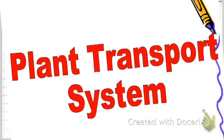Good morning students. Today we're going to look at the plant transport systems. I know you have already learned this, so this will serve as a revision — a recap of what you have learned. One thing to think about the plant transport system is that a plant has two very special tubes. What are the two special tubes? Try to recall.